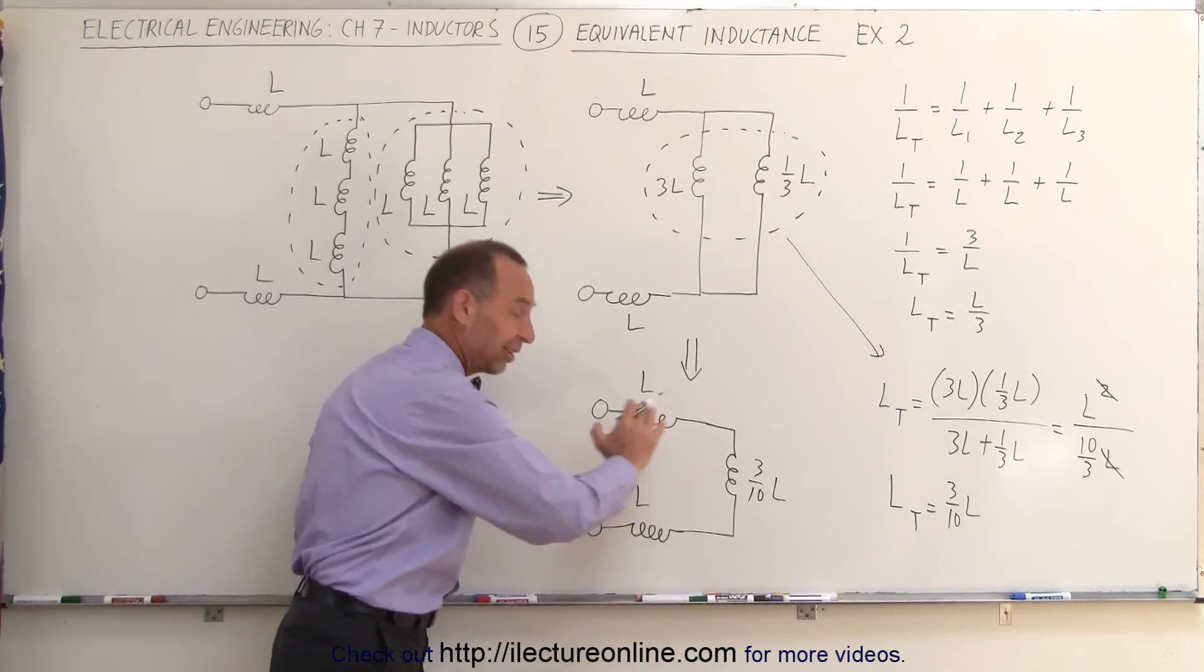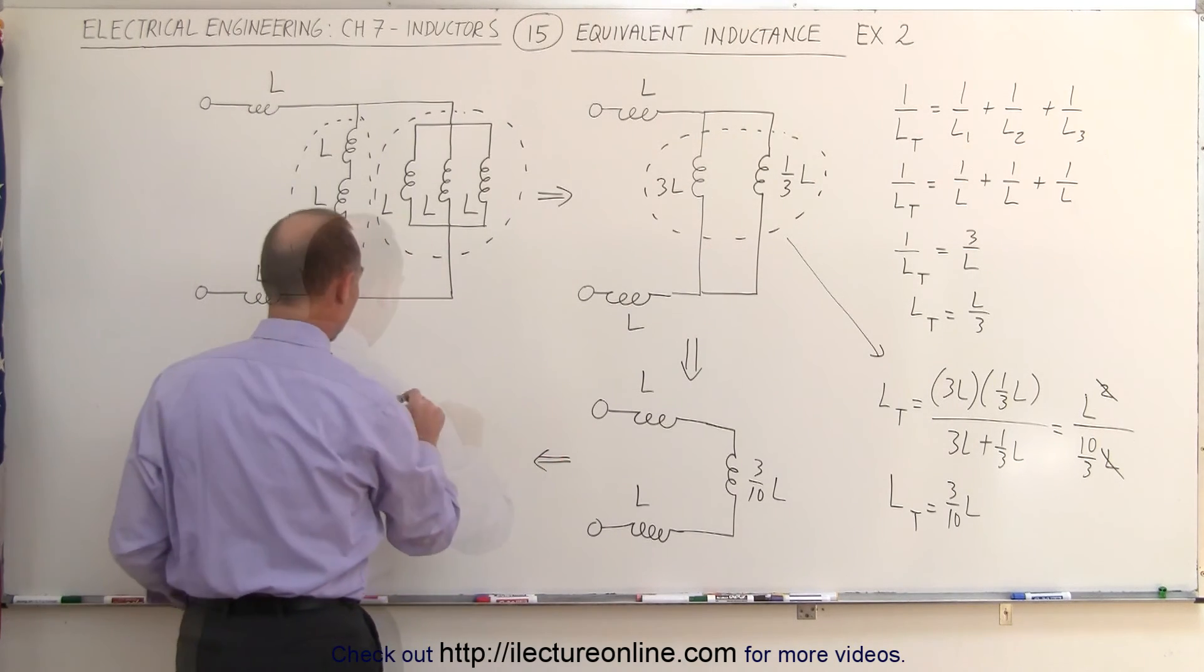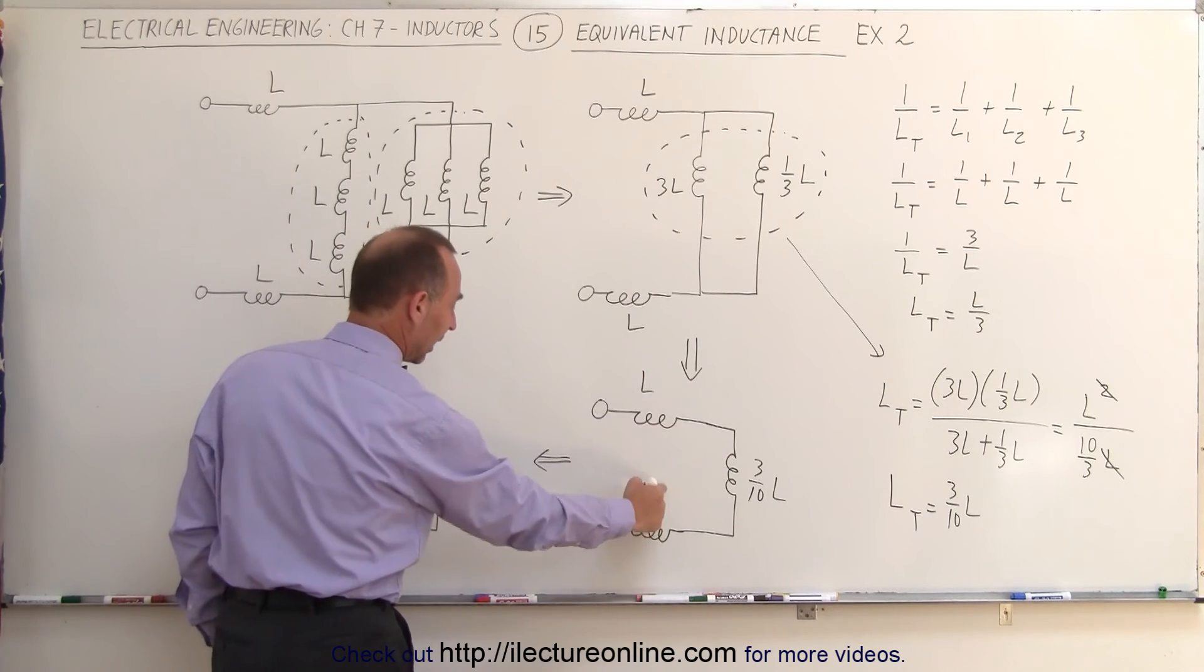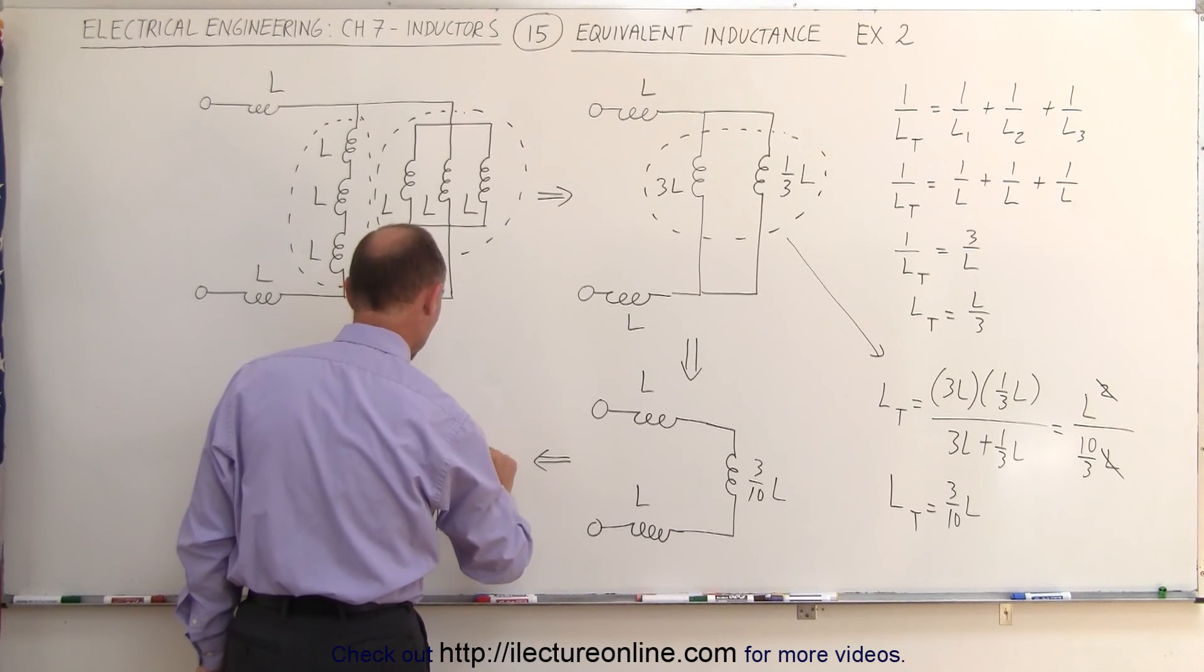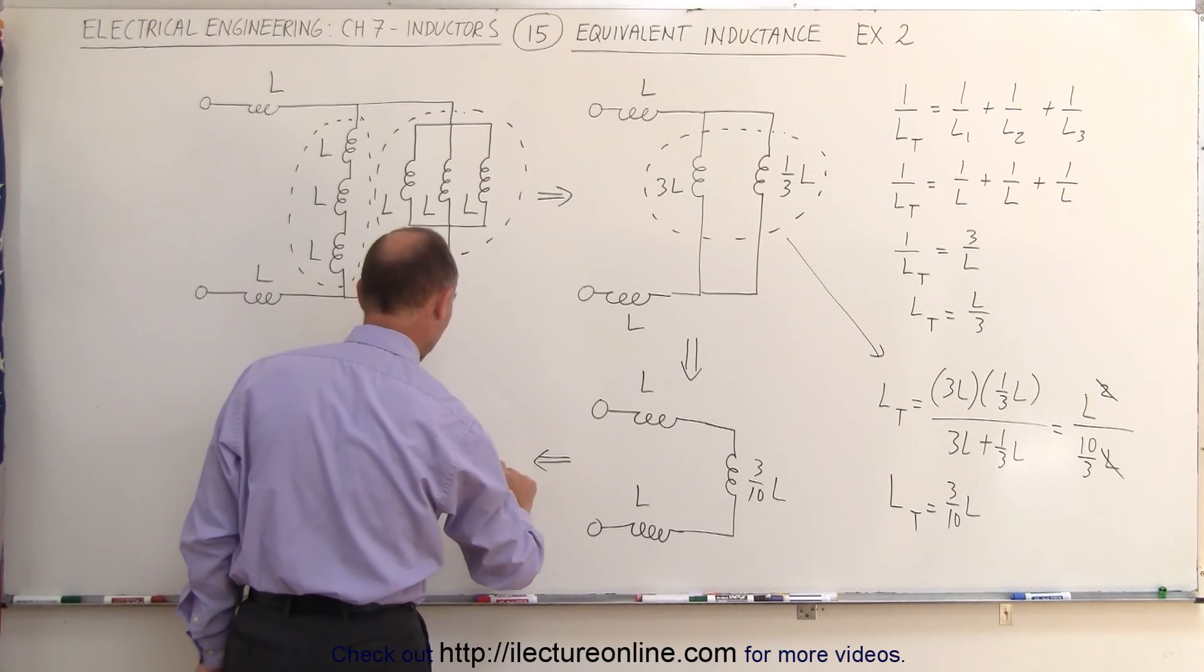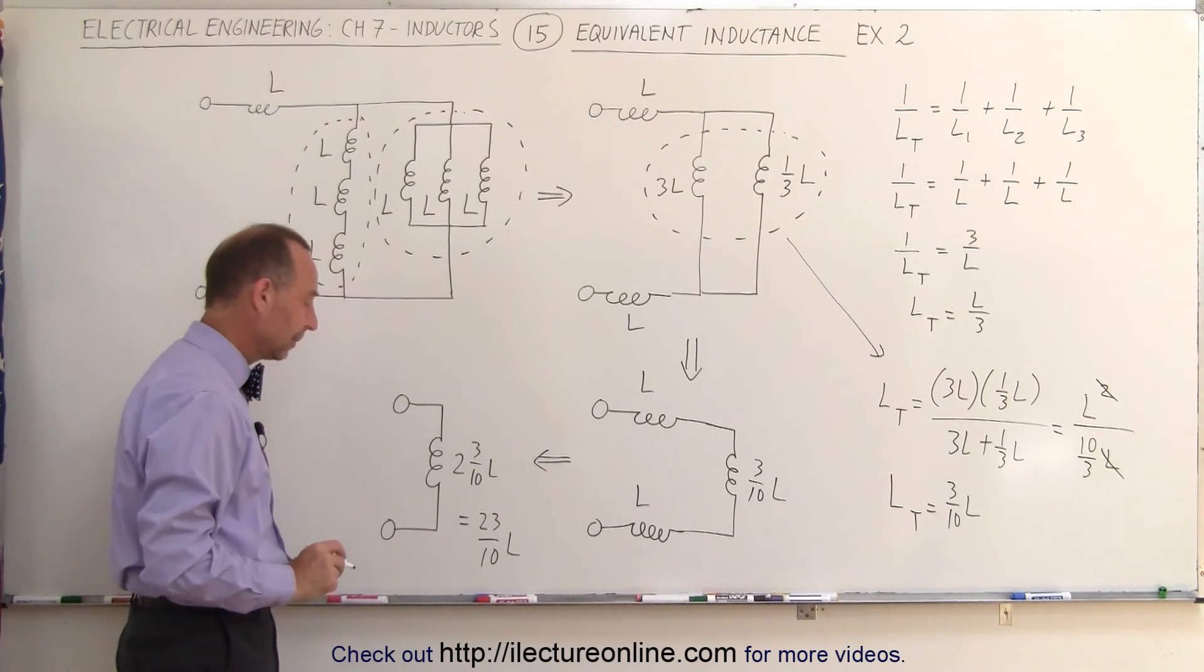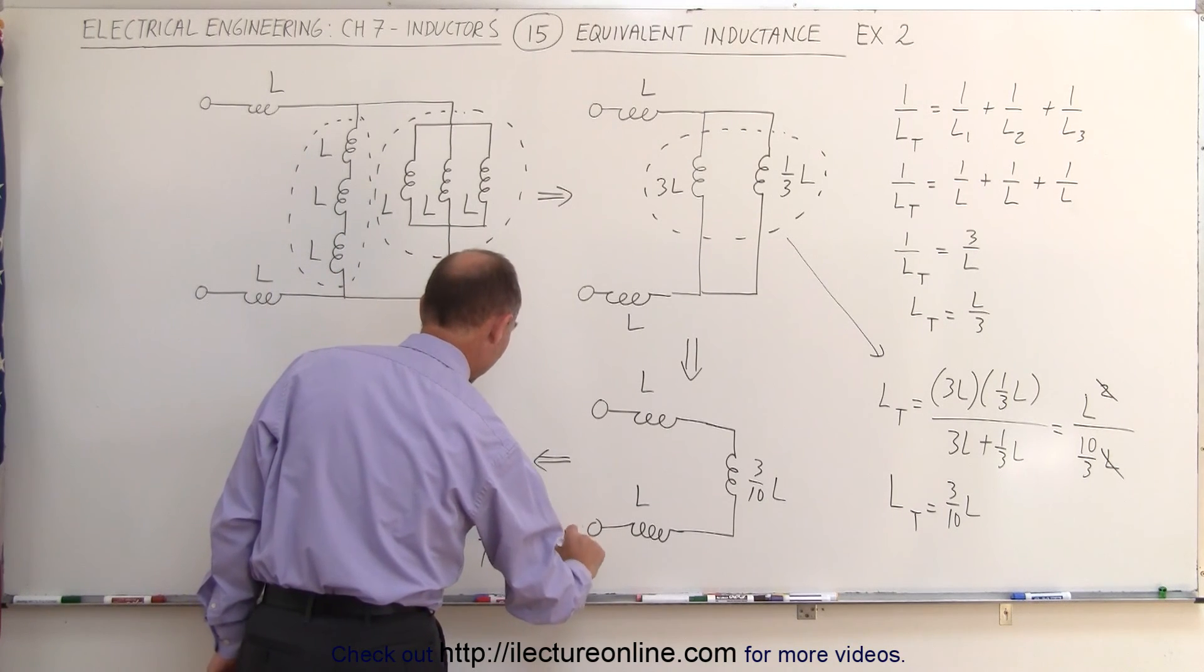And then, of course, you can see that these three are now in series. We can simply add them together to form a single inductor, which is the equivalent. When we add them together, L plus L plus three tenths of an L, that would be two and three tenths L, or we can simply write it as 23 over 10L, whichever you prefer. Or, we can simply say this is equal to 2.3L.